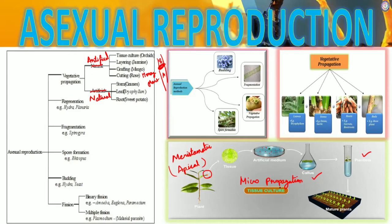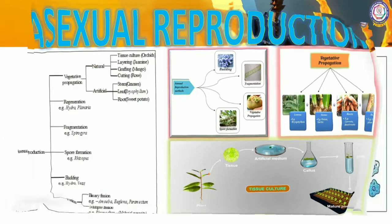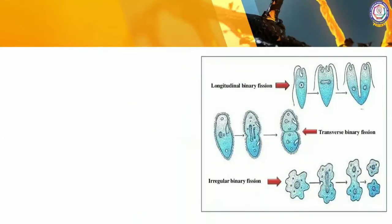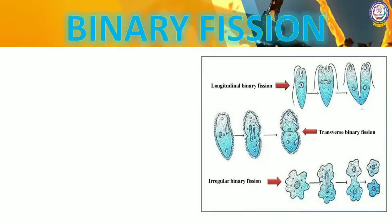We now come to the first topic of asexual reproduction: binary fission. Bi means two — the body is going to divide into two. We already know what binary fission is from Class 7, but now we explore how they divide and in what plane they divide. The plane of division is very important for the Class 10 board exam.